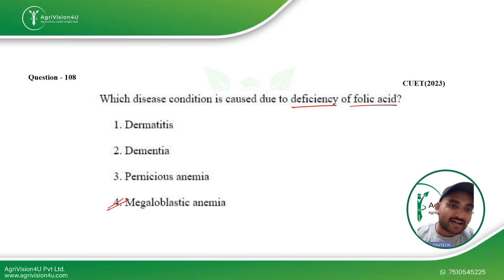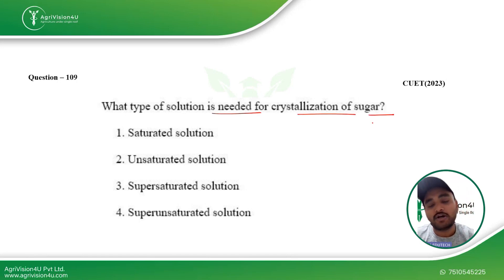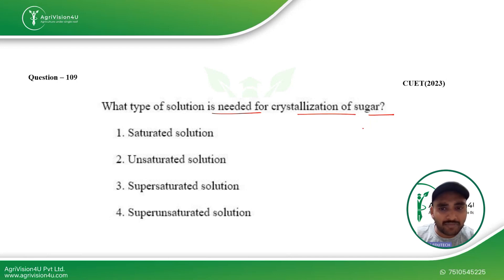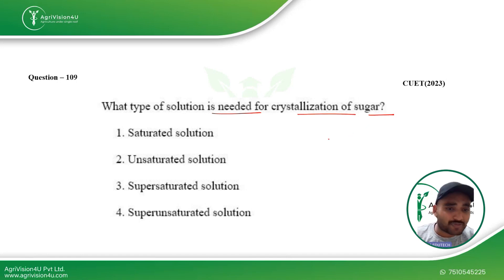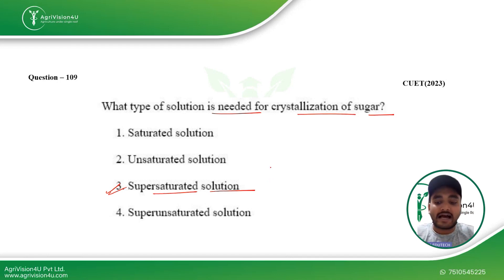The next question asks what type of solution is needed for crystallization of sugar. Many students may have done this experiment — you mix sugar in water and heat it until it becomes supersaturated. A supersaturated solution is required for crystallization of sugar; only after the supersaturation stage does recrystallization of sugar occur. So Option 3 is the right answer.